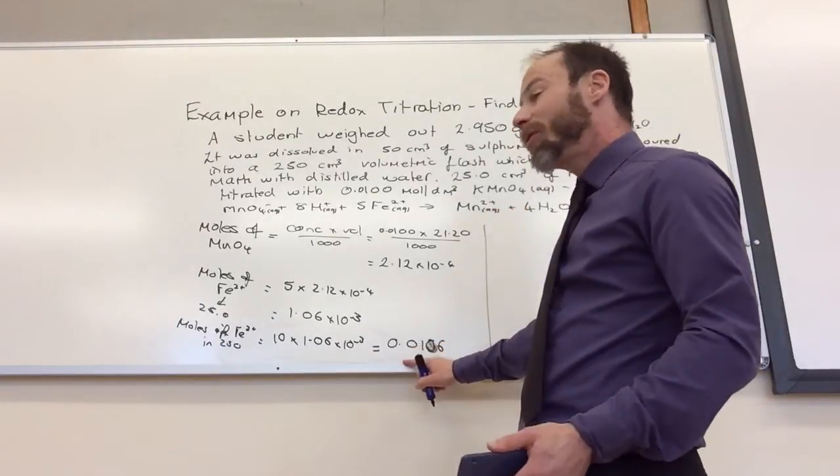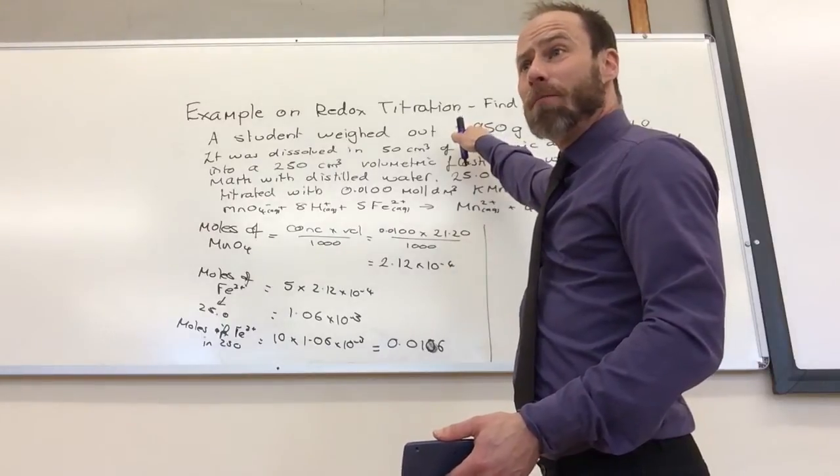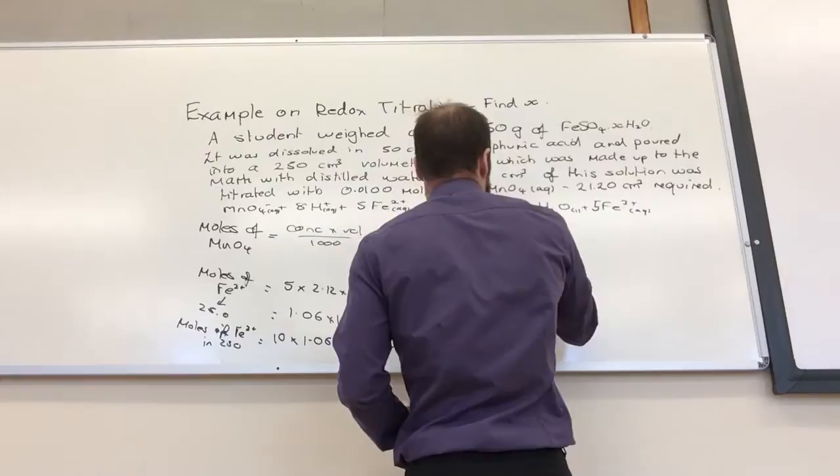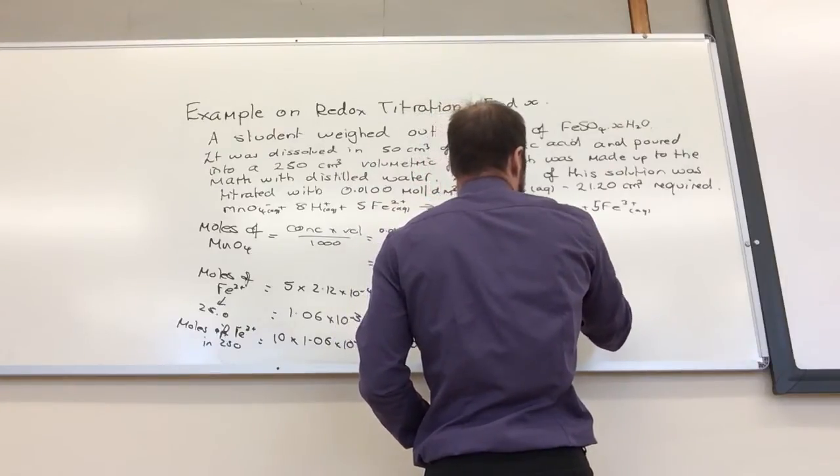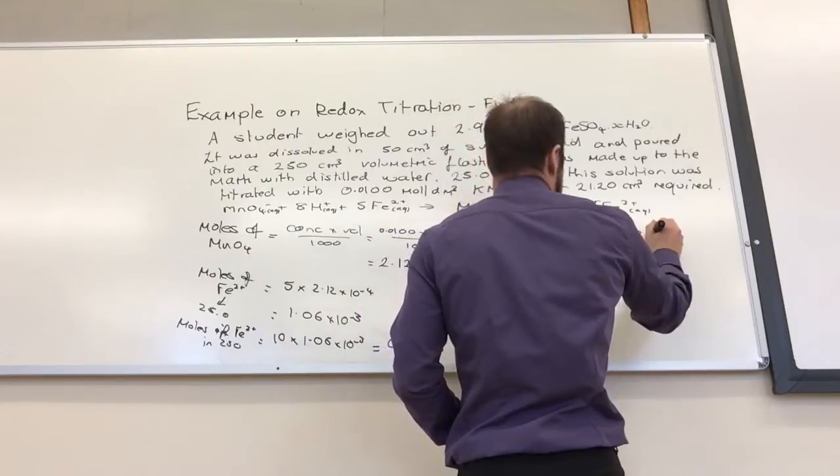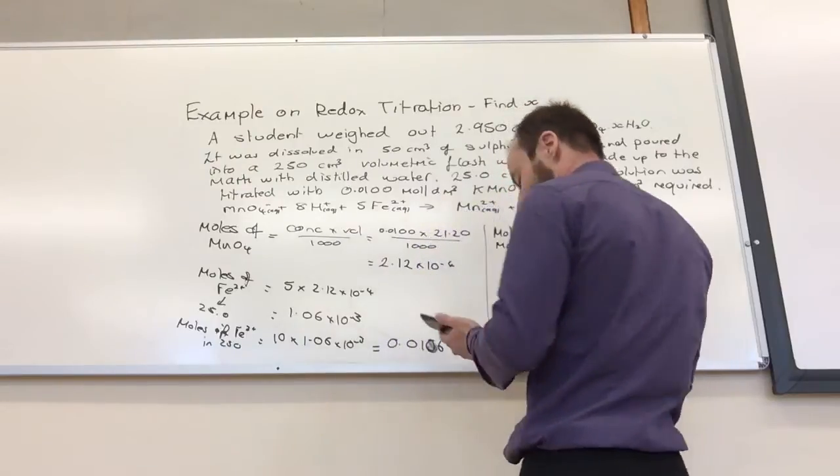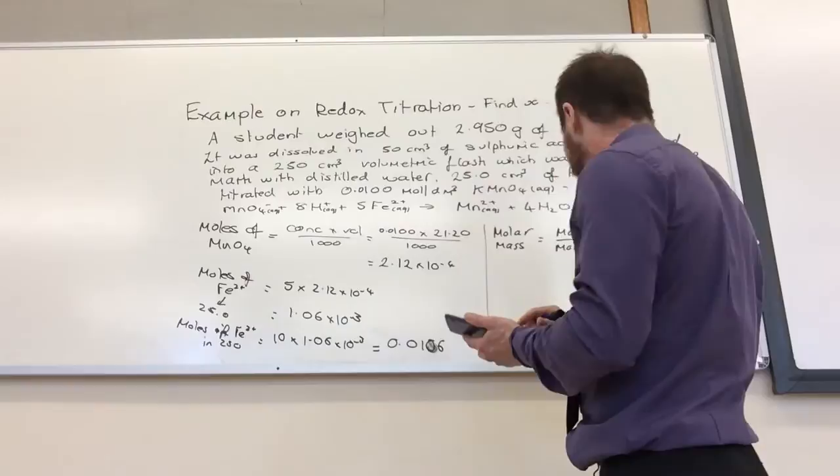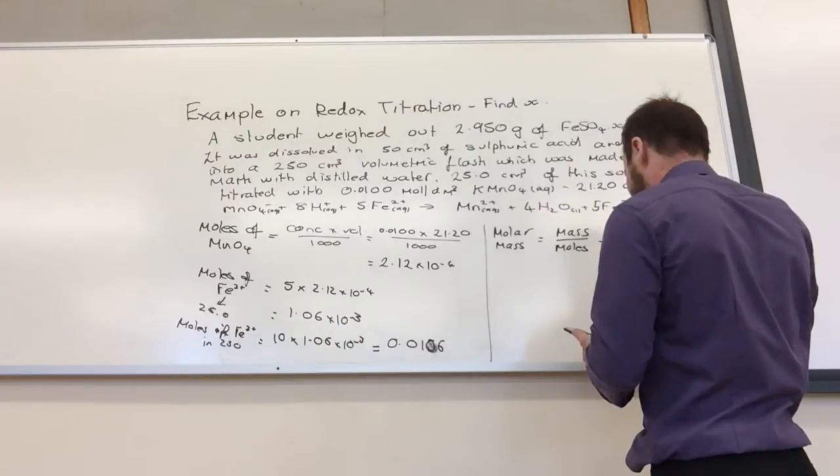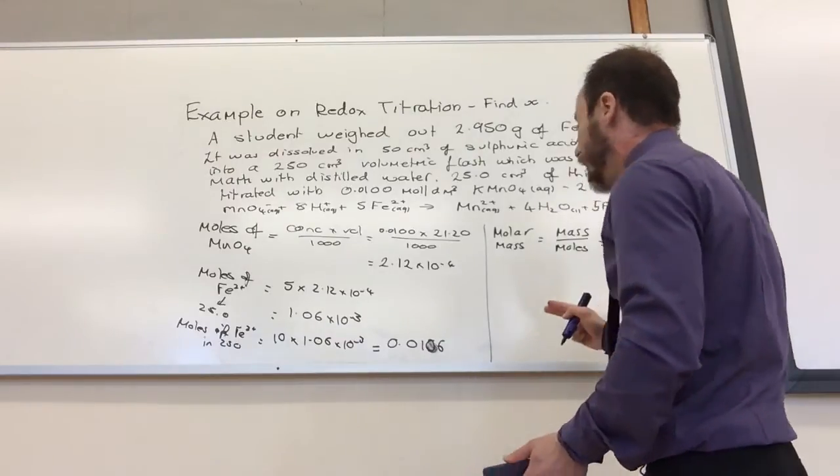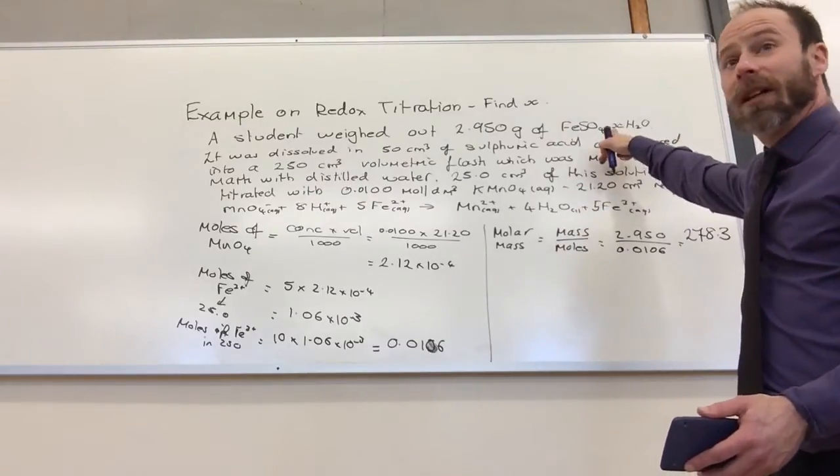Okay. So, I've got moles. I've got mass. I can find molar mass. Yep. So, molar mass is equal to mass over moles, which is 2.950 over 0.0106. So, let's do that. 2.95, that gives me 278.3. So, I've got my molar mass. I want to find X.